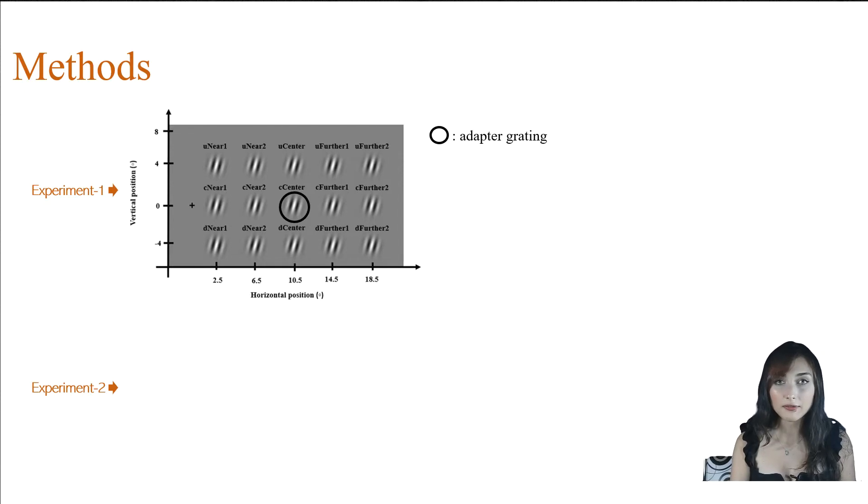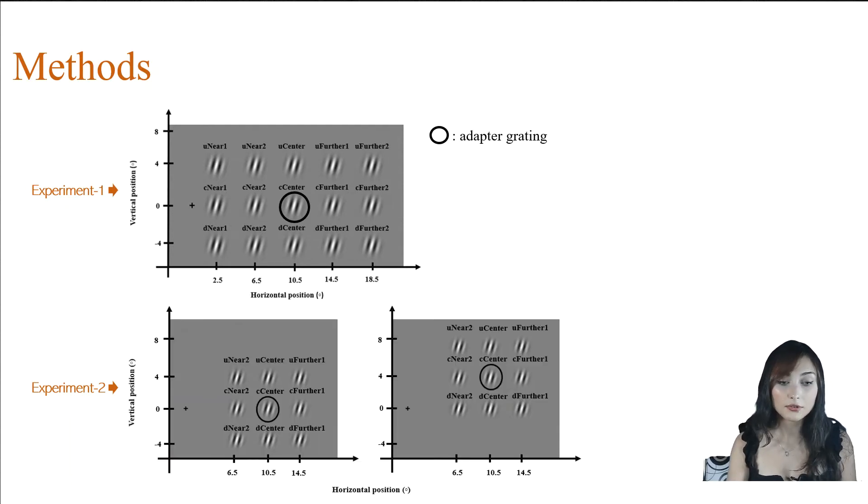In experiment 2, we wanted to investigate whether the adapter location impacts how the tilt-after effect spreads. To do that, we first used the same adapter location in experiment 1, but we also used another adapter location that's located 4 degrees above the first location.